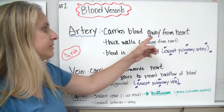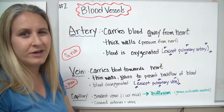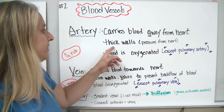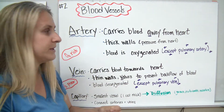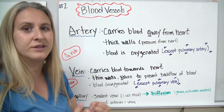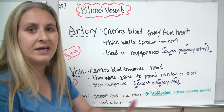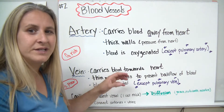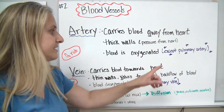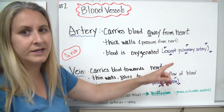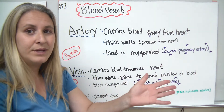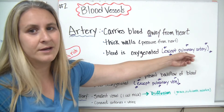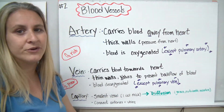Arteries carry blood away from the heart — a good way to remember this is 'A for Away.' They have very thick walls and are very muscular because there's a lot of pressure in the blood leaving the heart to allow it to get all the way around the body. Most arteries have high oxygen content, except for one: the pulmonary artery, which takes blood away from the heart leading to the lungs to pick up oxygen — that's what 'pulmonary' refers to.